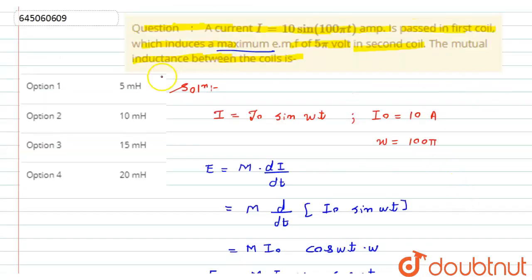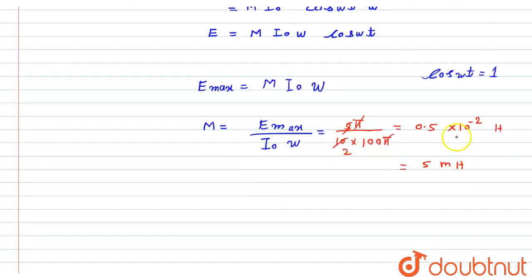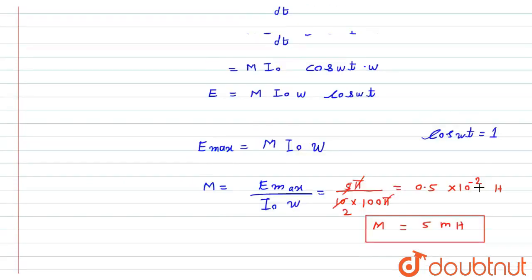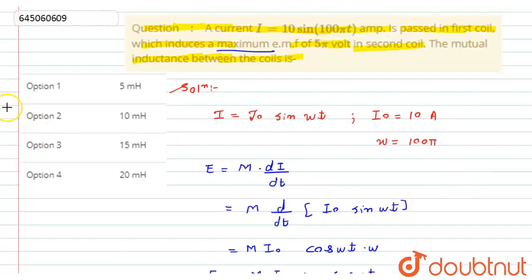So according to our calculation, the mutual inductance between the coils is capital M equals to 5 millihenry. So according to given options, option first will be the correct answer for this question. This is the required solution. Thank you.